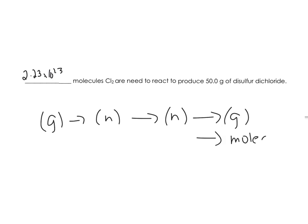We need 2.23 times 10^23 molecules of chlorine to produce 50 grams of disulfur dichloride. So this is how you calculate using gravimetric stoichiometry. Usually we go from grams to moles to moles to grams. In this case, we go to molecules as well. Balanced chemical equation, calculate moles - those are the first two steps.